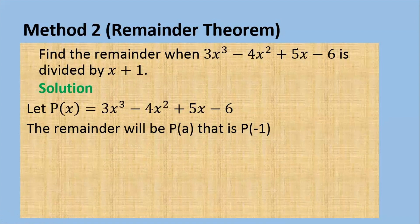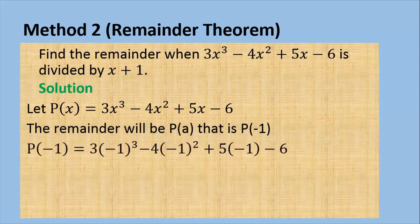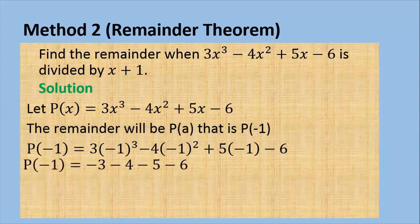What is p of minus 1? You simply replace all the x by negative 1. So you will get 3 times negative 1 cubed minus 4 times negative 1 squared plus 5 times negative 1 minus 6. That gives minus 3, minus 4, minus 5, minus 6, which is negative 18. So it's a quicker method to find the remainder.